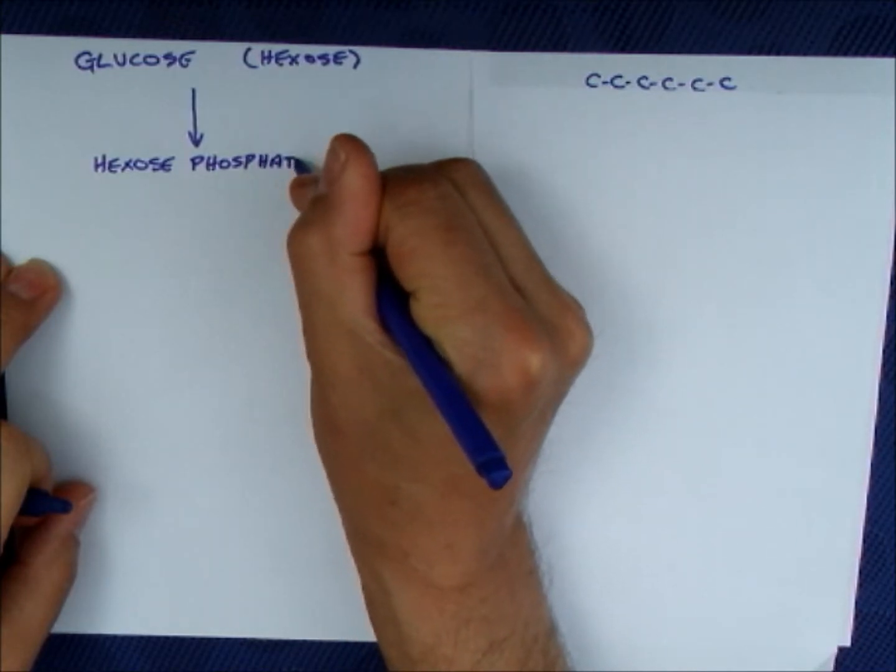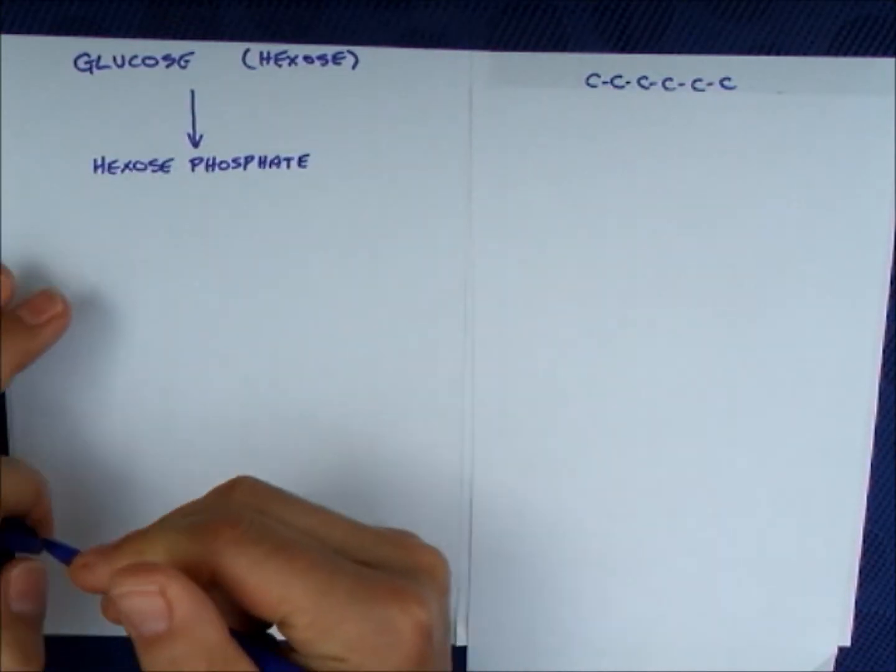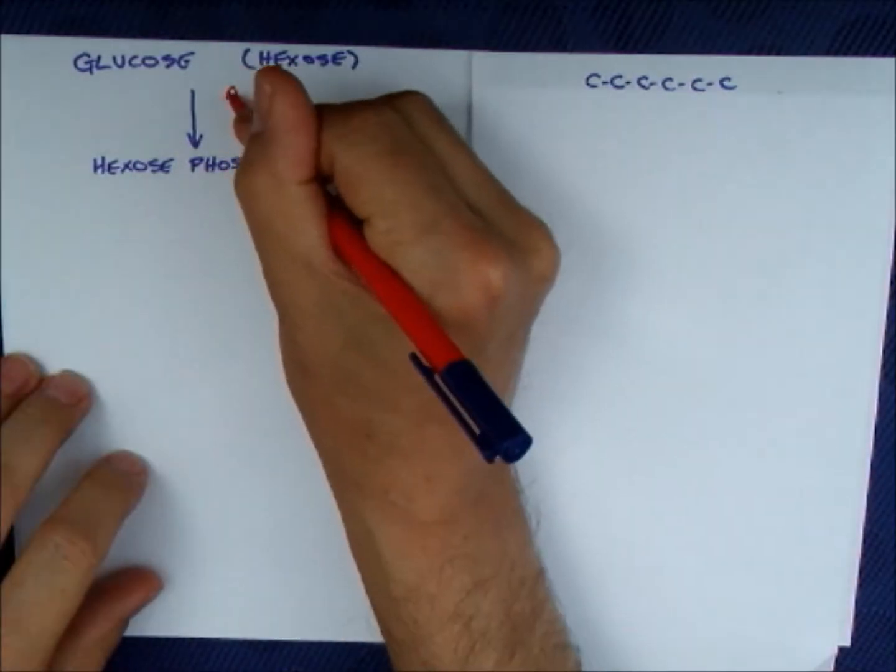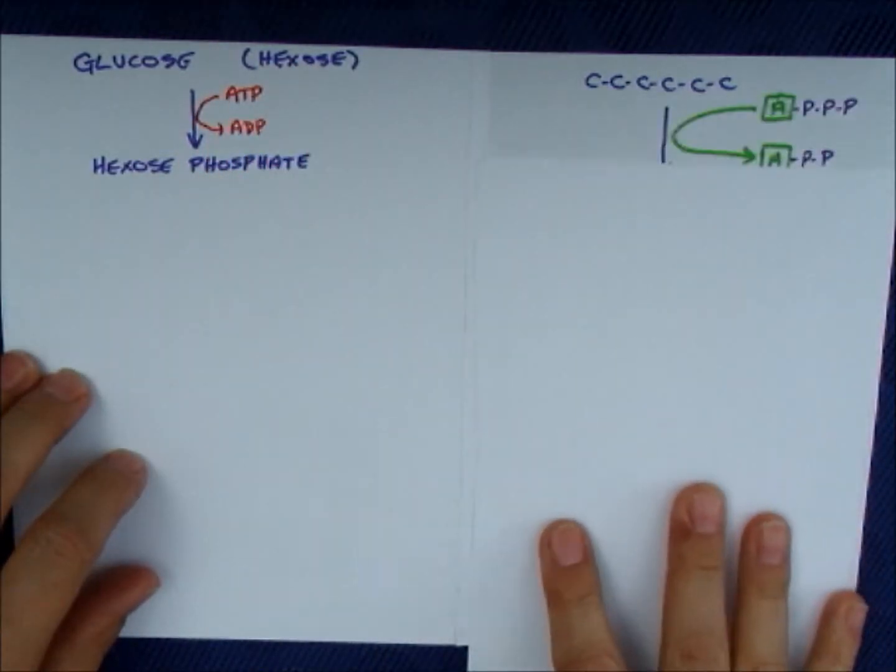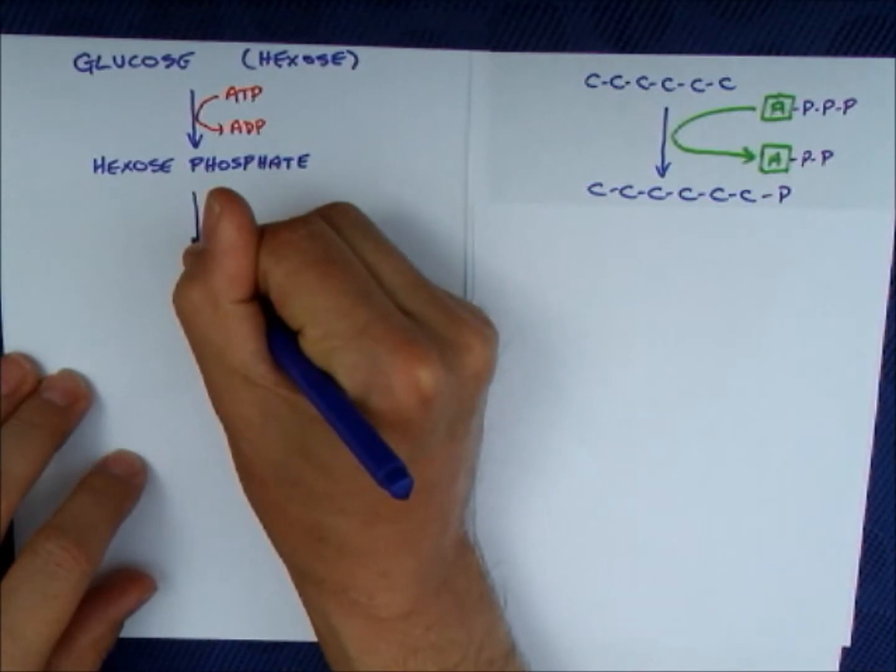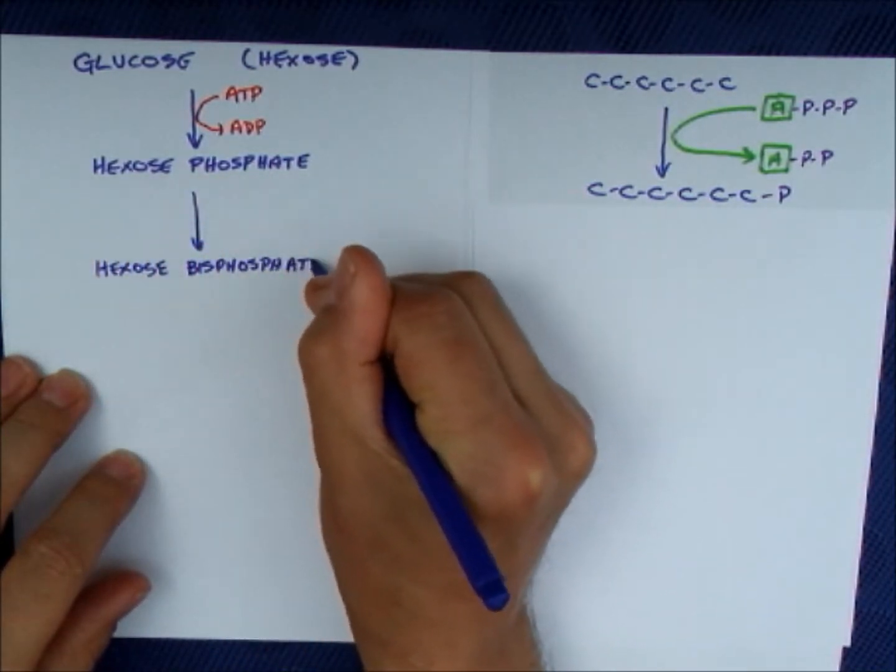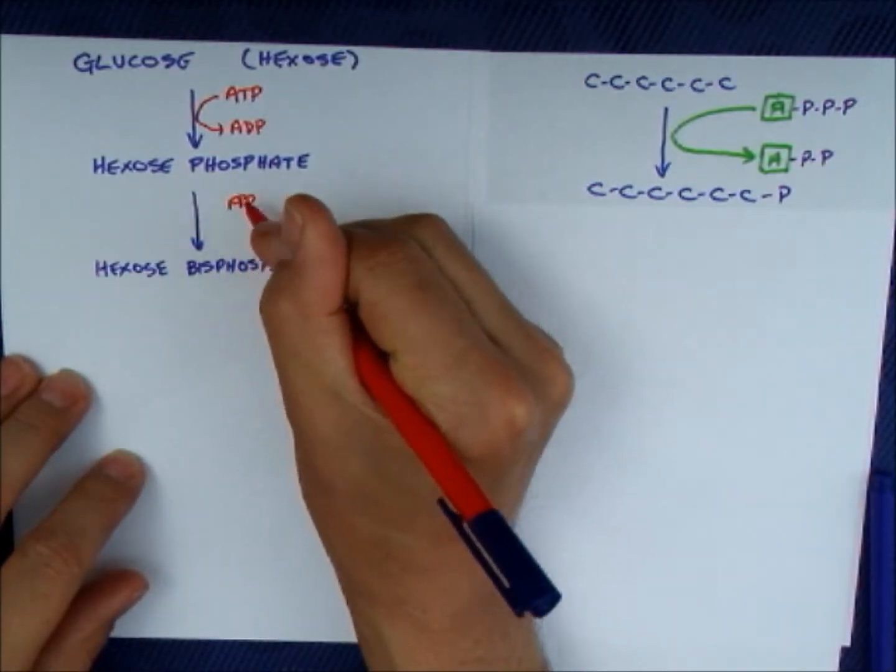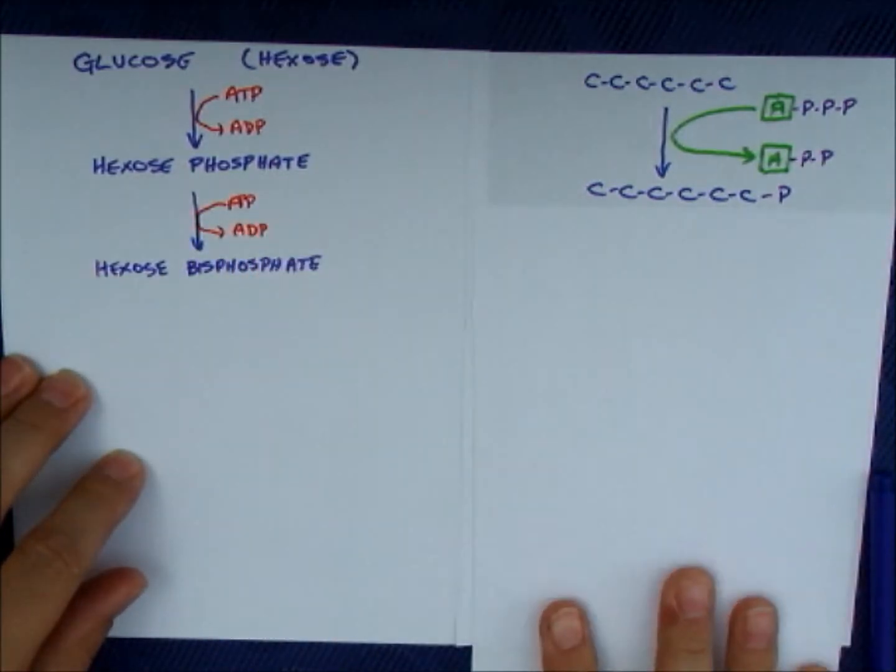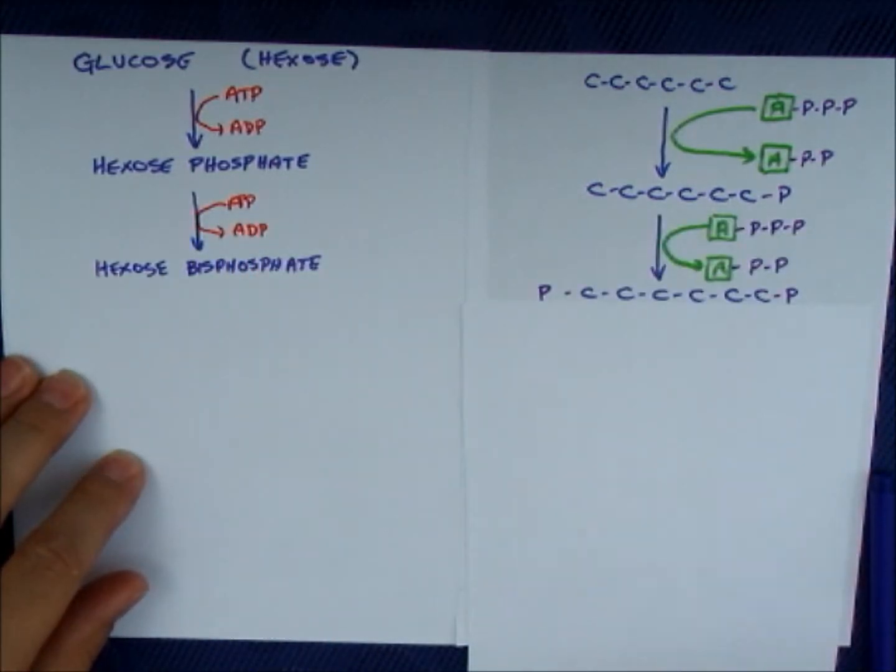So the first stage is by using an ATP molecule, we take a phosphate and add it onto the hexose to make hexose phosphate. Hexose phosphate is further phosphorylated to form hexose bisphosphate, and as you can see that's six carbons with two phosphates.